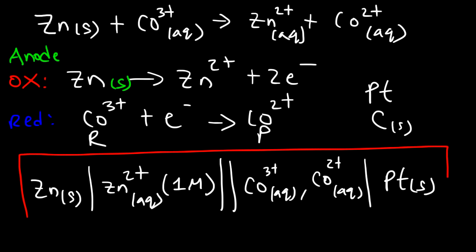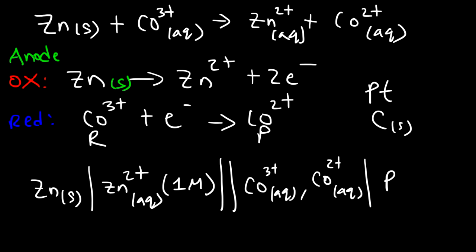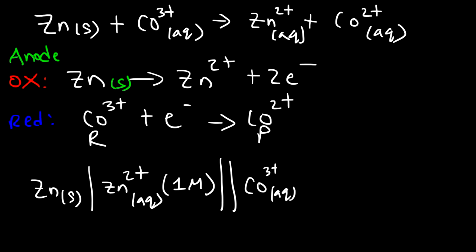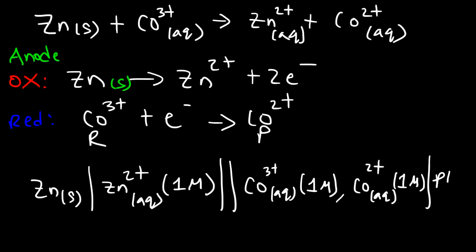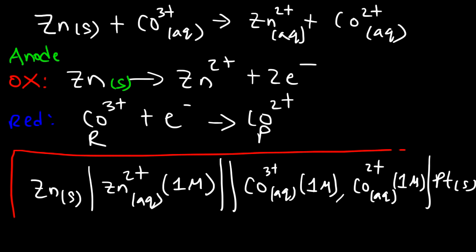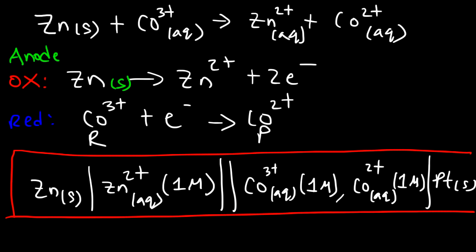That gives us the line notation for this reaction, but we need to add concentrations for all species in solution. Both Co³⁺ and Co²⁺ should each be labeled as 1 M, and then we place the platinum electrode at the end. Don't forget to put the concentration of all species in solution that are directly part of the reaction.